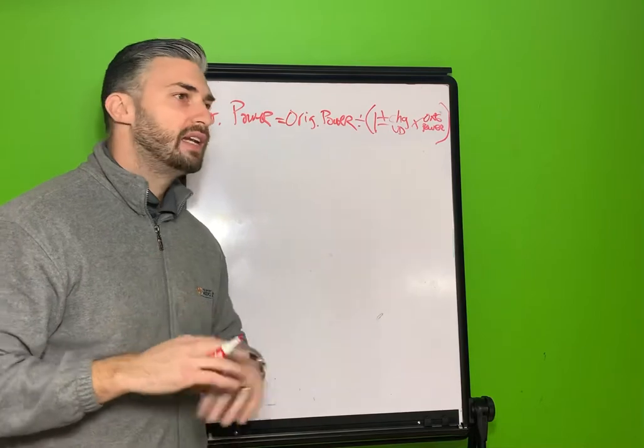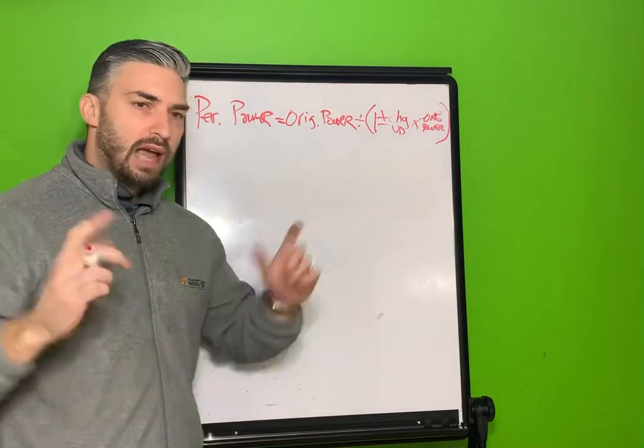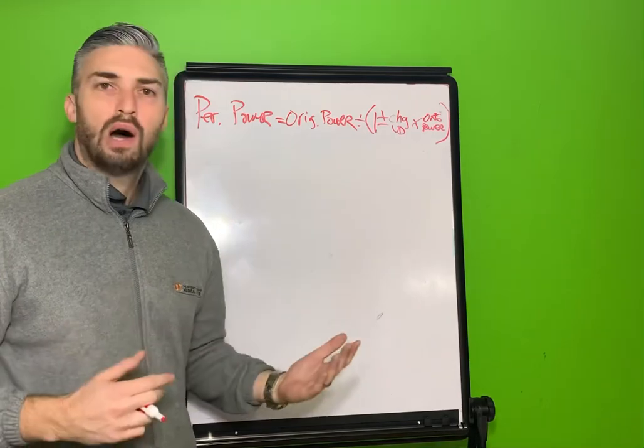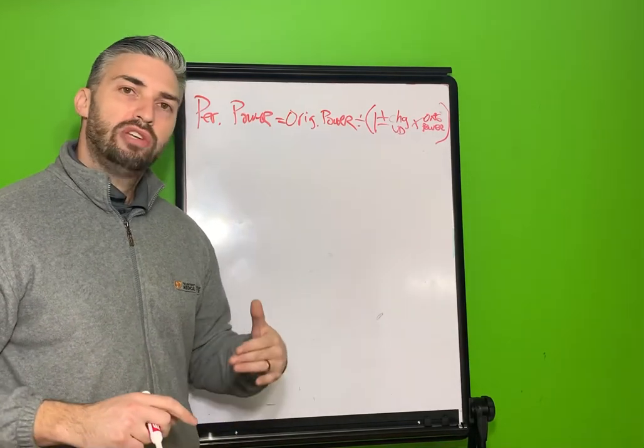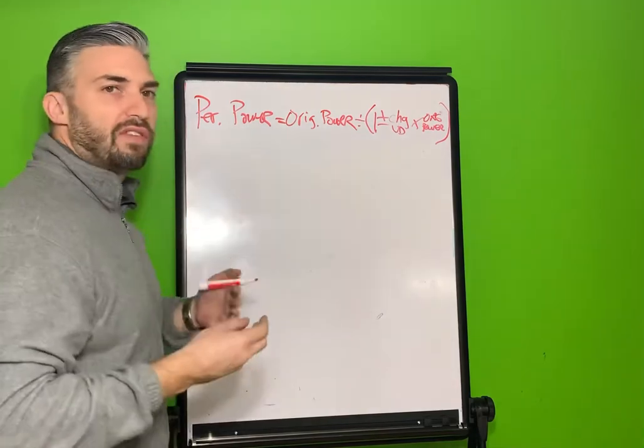Let's say somebody is refracted and they are a minus 10 sphere. So in the phoropter, everything's dialed in, they are seeing well with a minus 10. Again, what you need to remember is that that's at a 12 millimeter distance from the cornea.